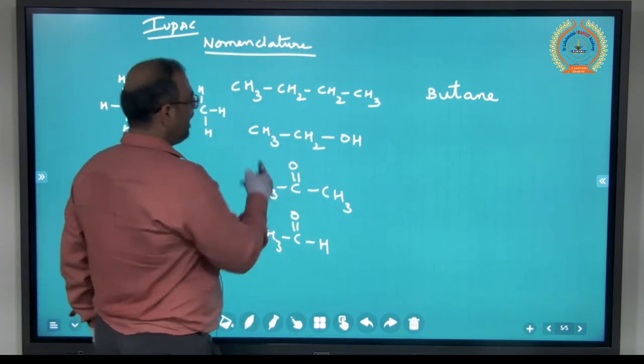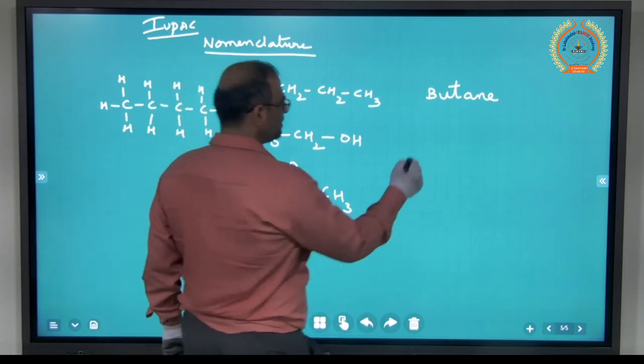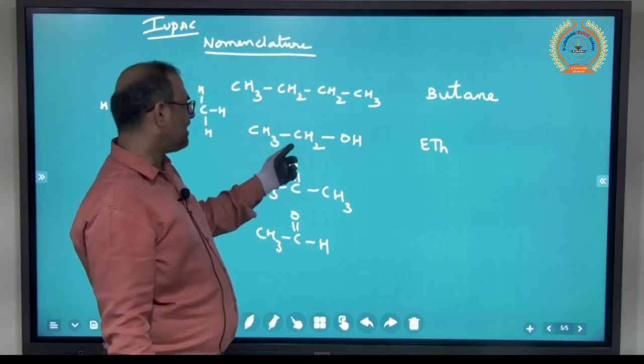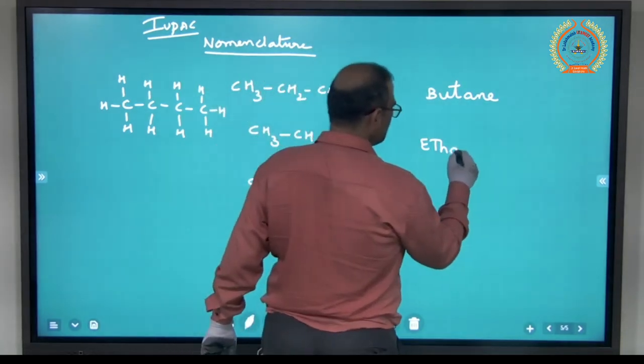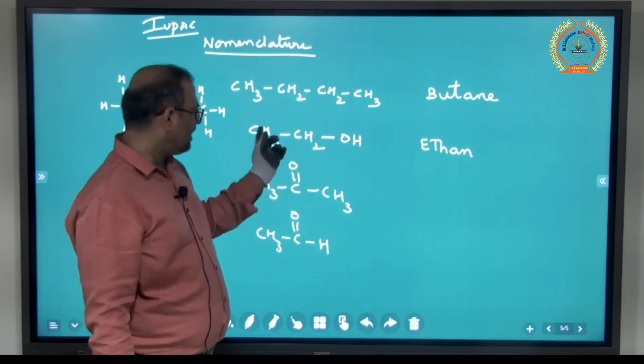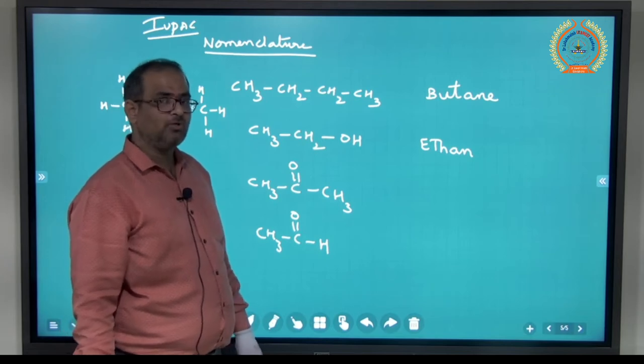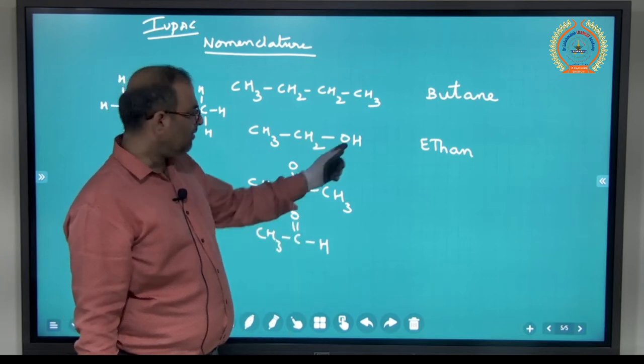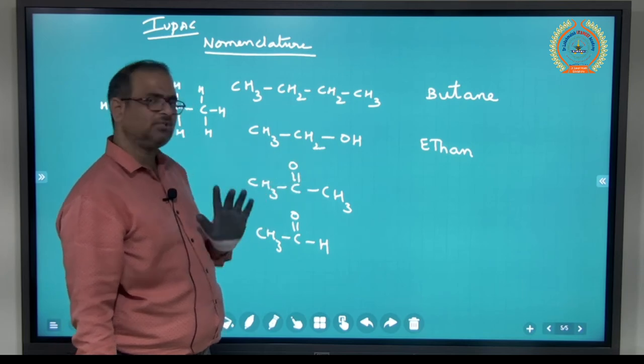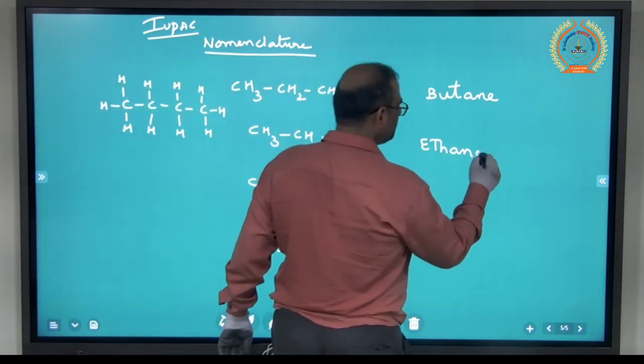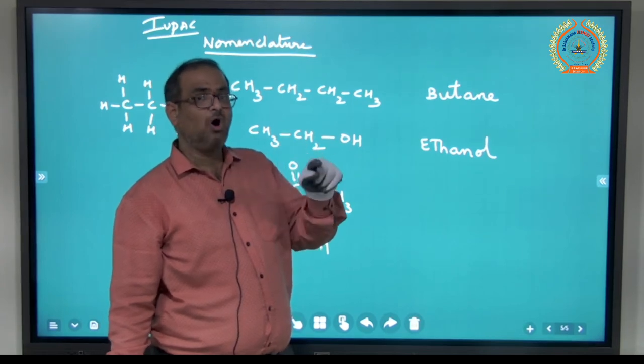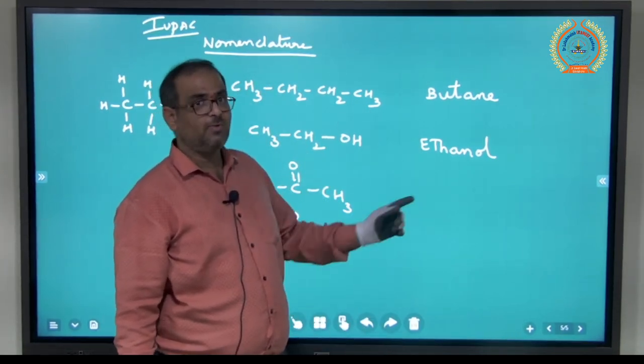Similarly, see the second one. How many carbons are there? One, two. Two carbons means, according to IUPAC system, it. It means two carbons. Single bonds only, so it should be ethane. But I am not writing ethane completely. Why? Because along with carbons and hydrogen, OH group is present. Whenever OH group is present, then the compound will be called as alcohol. So this becomes ethanol.